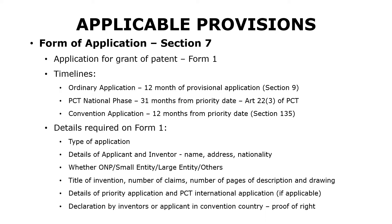Section 7 of the Patents Act provides what is the form of application that should be used when filing the patent application. It provides that the application for grant of patent needs to be furnished on Form 1, with all the details of the applicant and the inventor filled in, along with the complete specification when filing the patent application.